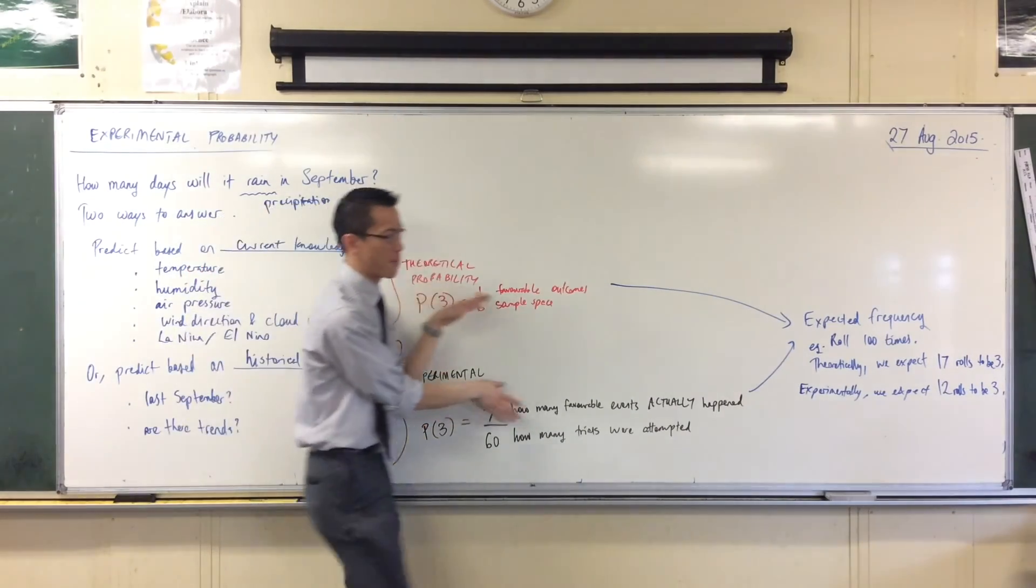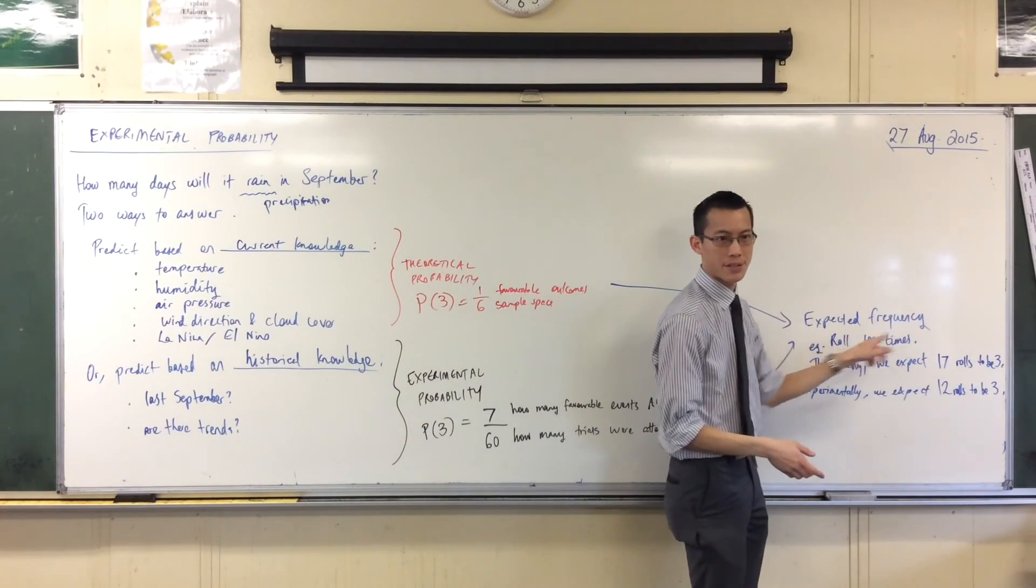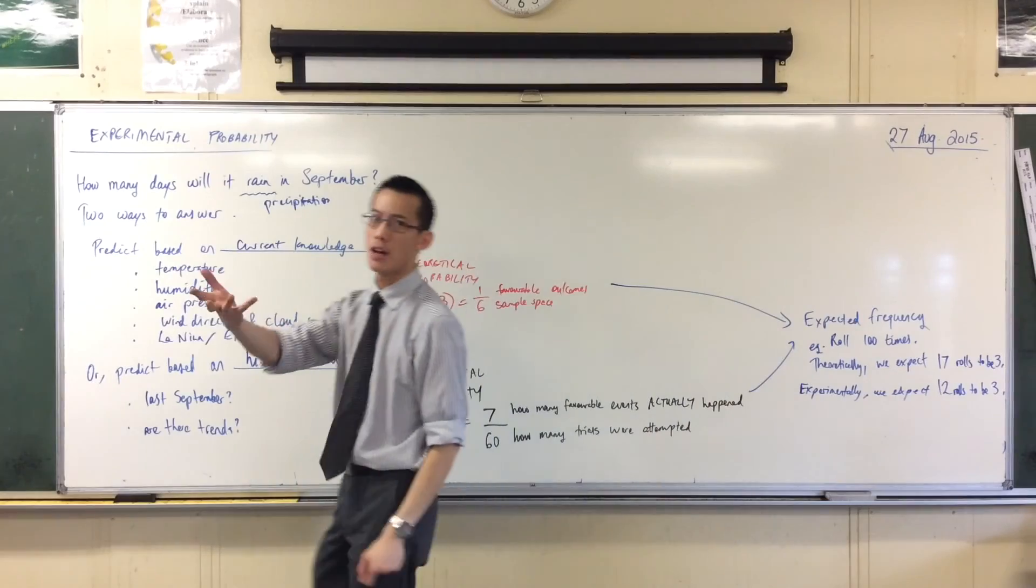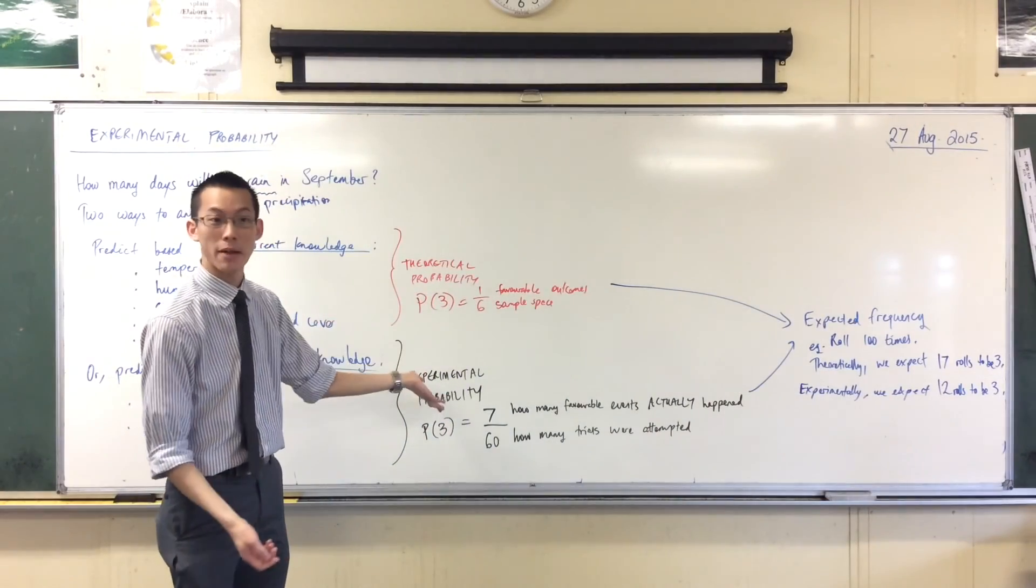So this idea of comparing ideal perfect circumstances versus what actually happens—that's what these two categories are about. They give you different results, and so you always need to say which one's which. Am I thinking about it in theory, or am I thinking about it as an experiment?